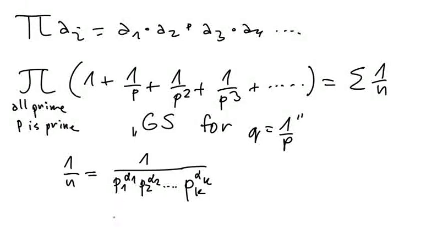And now we have the infinite number of these infinite brackets. So what we are going to do is, in the bracket for p1, we take 1 over p1 to alpha 1. And in the bracket for p2, we take 1 over p2 to alpha 2 and so on. And from all other brackets for the prime numbers, which are not in this list of divisors of n, we pick just the 1 here.